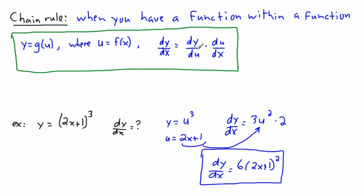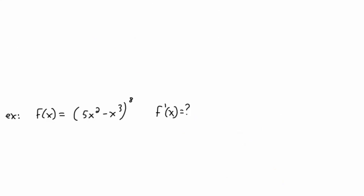That's how we deal with chain rule — the key is recognizing a function within a function, which takes practice. I recommend trying lots of different examples with this notation. But I also like to look at it a slightly different way: there's an outside function — some junk to the power of three — and an inner function. This is why I like the inception analogy.